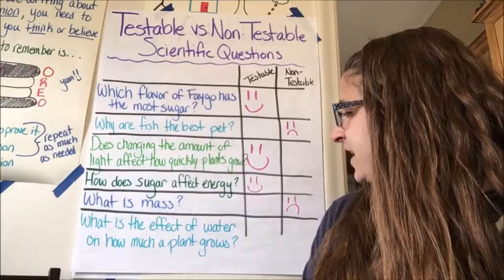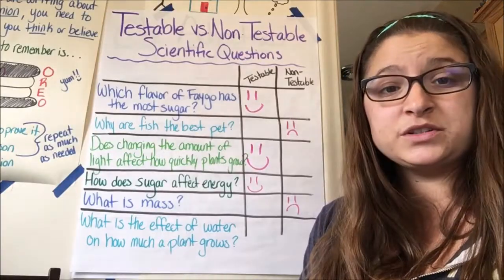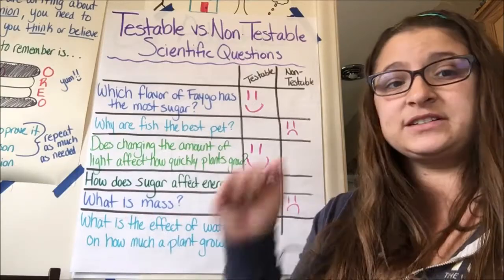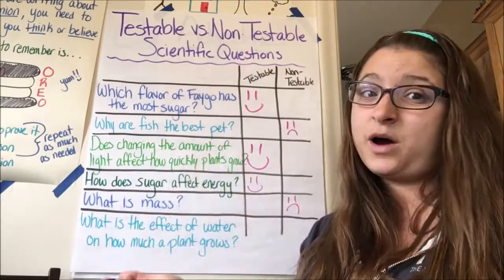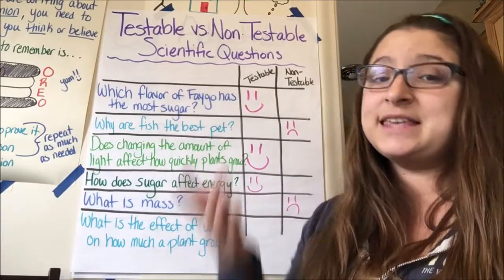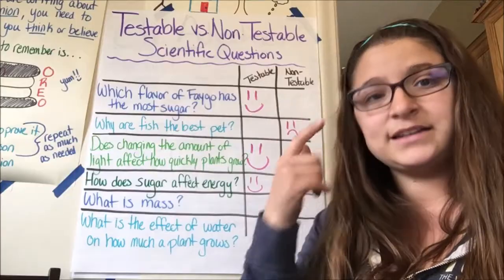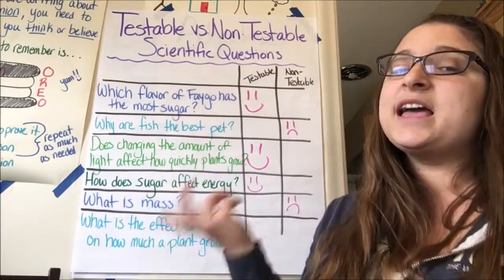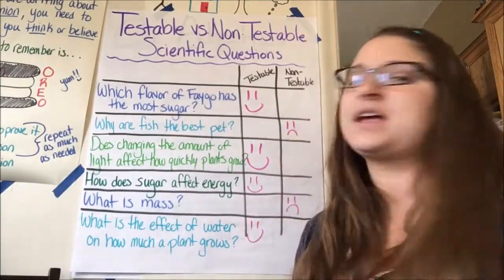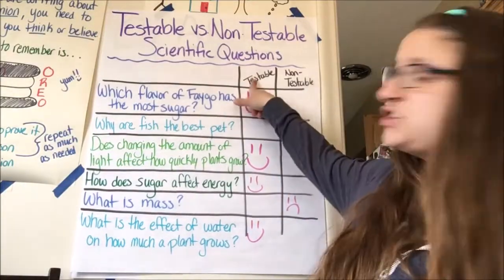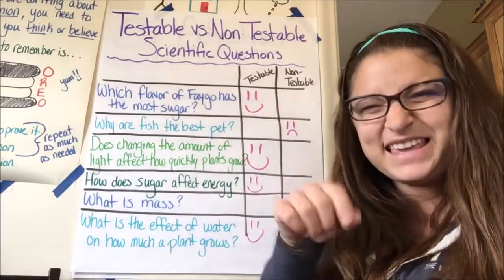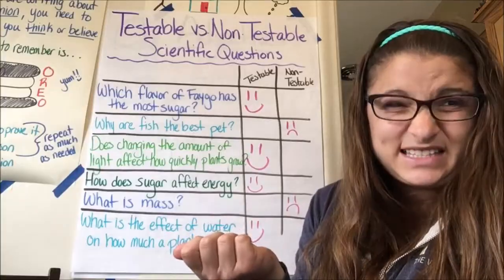How about: what is the effect of water on how much a plant grows? Could you test that? Give it no water, give it some water, give it lots of water, give it so much it drowns. Would you be able to see how much the plant grows? Yes, you can. If you can create an experiment in your mind wrapped around that question, it's often going to be a testable question.